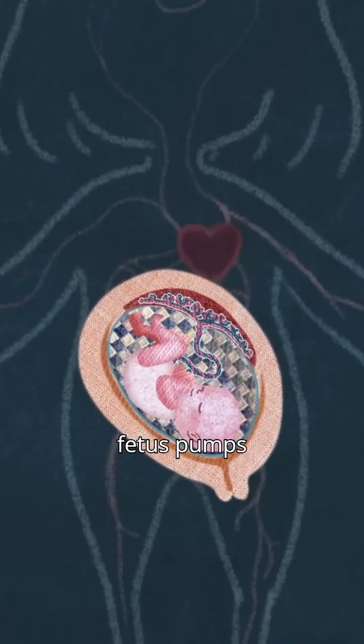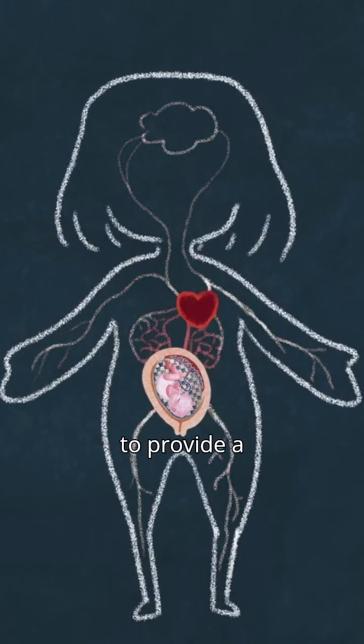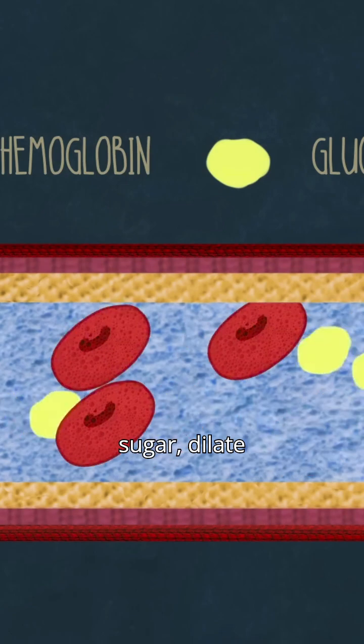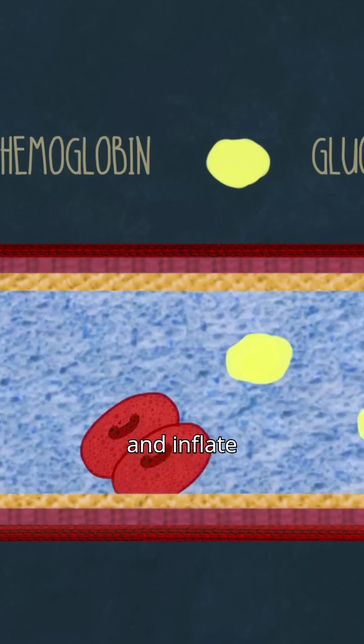Through its placenta, the fetus pumps the mother's arteries with hormones that keep them open to provide a permanent flow of nutrient-rich blood. A fetus with such unrestricted access can manufacture hormones to increase the mother's blood sugar, dilate her arteries, and inflate her blood pressure.